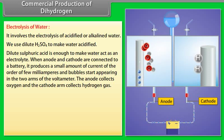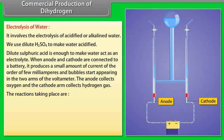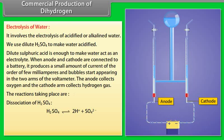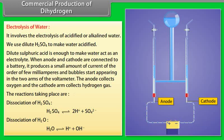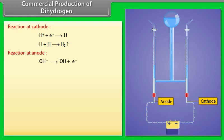The anode collects oxygen and the cathode arm collects hydrogen gas. The reactions taking place are: Dissociation of H2SO4: H2SO4 gives 2H plus plus SO4 2 minus. Dissociation of H2O: H2O gives H plus plus OH minus. Reaction at cathode: H plus plus electron gives H, H plus H gives H2. Reaction at anode: OH minus gives OH plus electron, 4OH gives H2O plus O2. Overall reaction: 2H2O gives 2H2 plus O2.